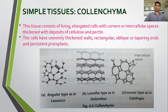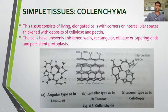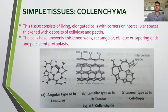The second simple tissue is collenchyma. This tissue consists of living elongated cells with corners or intercellular spaces thickened with deposits of cellulose and pectin. The cellulose and pectin are deposited in the intercellular spaces present between the cells. This tissue consists of living elongated cells with corners and intercellular spaces thickened with the deposition of cellulose and pectin. The cells have unequally thickened walls, rectangular, oblique or tapering heads, and persistent protoplast.